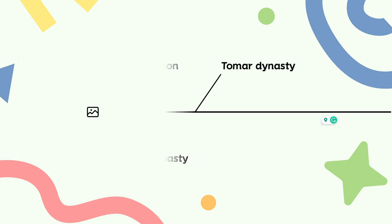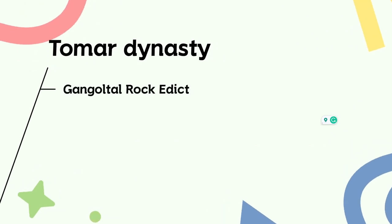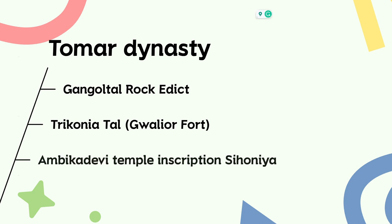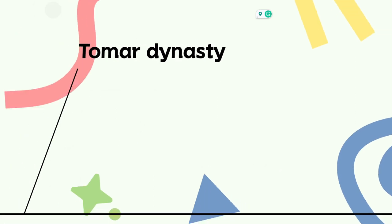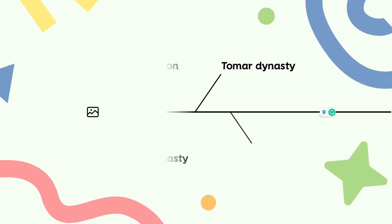The next inscription is related to the Tomar dynasty, which had its kingdom in the Gwalior region. The most important inscription of this dynasty is the Gangoola Tal Shilalek, located at Gangoola Tal in Gwalior. Then there is the Tikonia Tal inscription inside Gwalior Fort, and an Ambika Devi Temple inscription in Sihonia. So there are three inscriptions related to the Tomar dynasty.